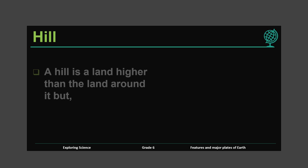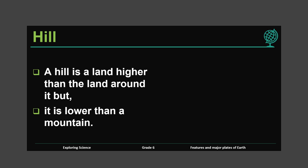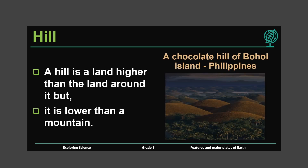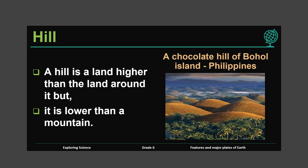A hill is a land higher than the land around it, but it is lower than a mountain. The Chocolate Hills of Bohol Island, Philippines — isn't it beautiful? The hills get their name because in the dry season their color changes from greenish to brown. Interesting, right?